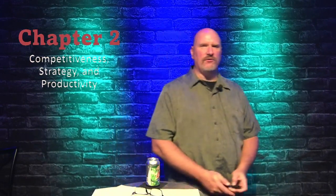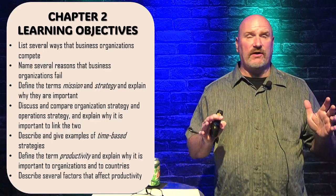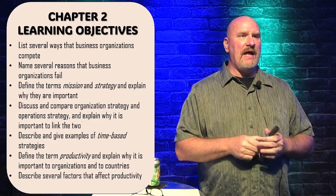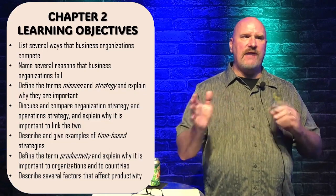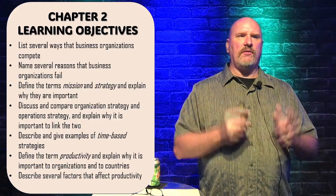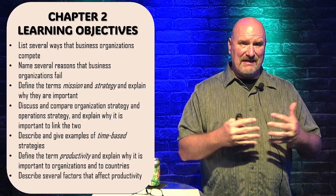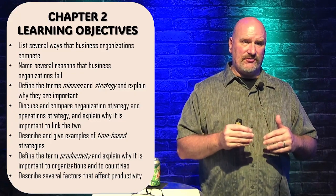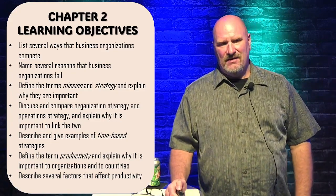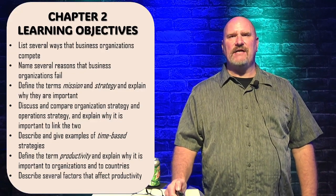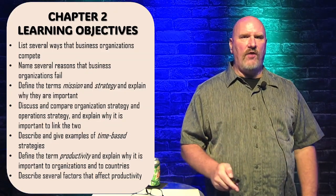Chapter two learning objectives: we'll cover several ways that business organizations compete, name several reasons that business organizations fail, discuss mission and strategy and explain why they're important, look at organizational strategy and operations strategy and why they link together, examine time-based and other strategies, define the term productivity, and describe several factors that affect productivity.